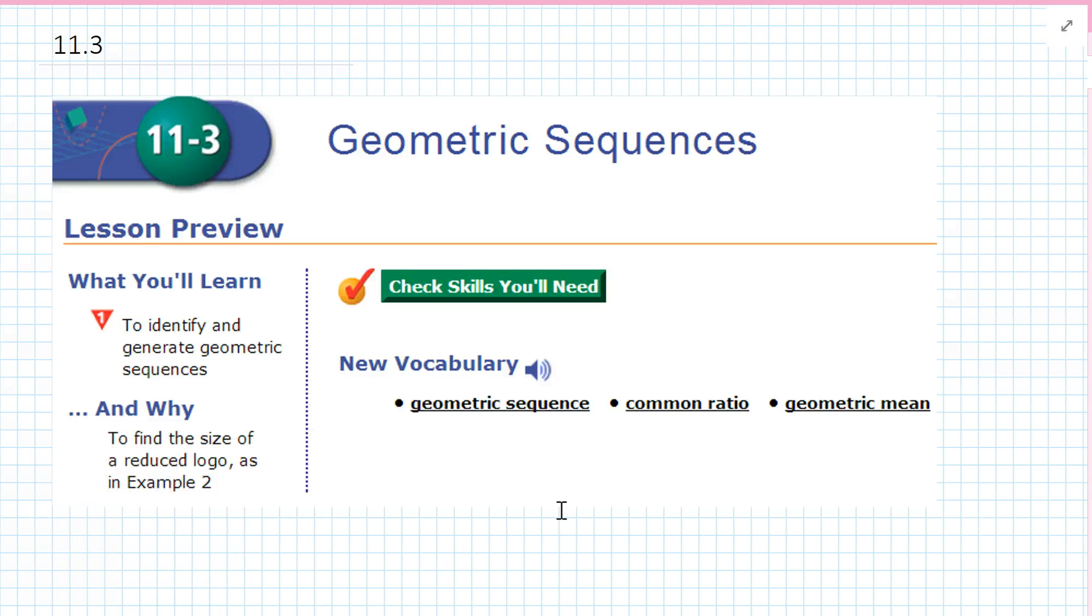All right, Algebra 2, Chapter 11, Section 3, Geometric Sequences. In this section, we're going to discuss and learn how to identify and generate geometric sequences. We're going to learn about geometric sequences, the common ratio, and the geometric mean.